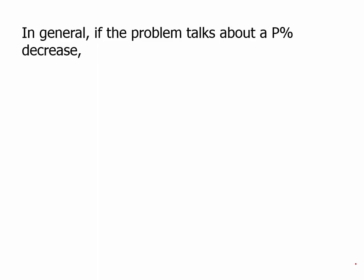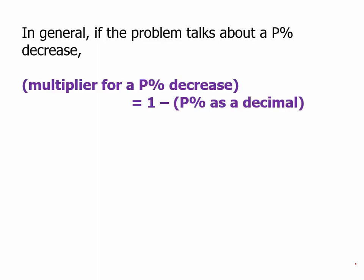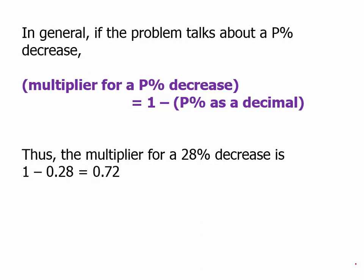In general, if the problem talks about a P percent decrease, the multiplier for a P percent decrease is 1 minus the percent as a decimal. So for example, the multiplier for a 28% decrease is 1 minus 0.28, and that happens to be 0.72. Another way to say that is if we remove 28% of anything, we're going to be left with 72% of it.